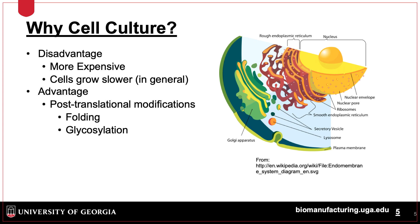Why do we use cell culture? Cell production is typically much more expensive than growing microbial cells, and these cells grow much slower. The main advantage is mammalian cells have cellular machinery for proper post-translational modifications, including protein folding and glycosylation. In many cases, proteins such as antibodies cannot be made in microbial cells, and mammalian cells have to be used.